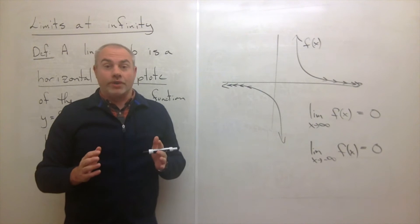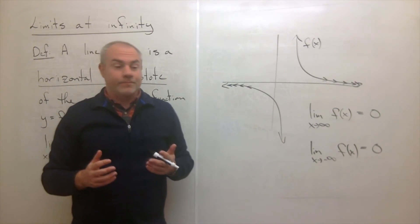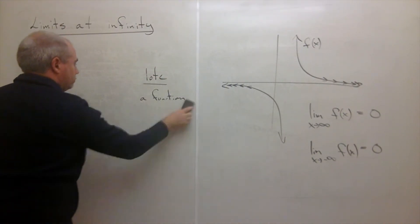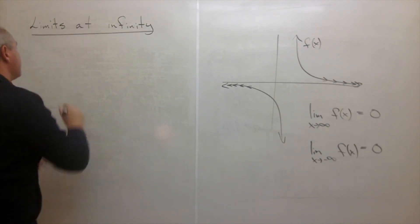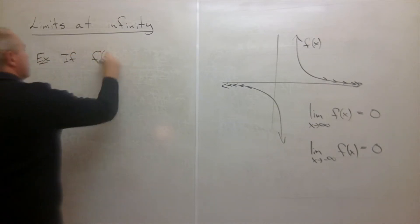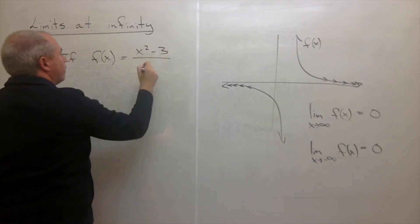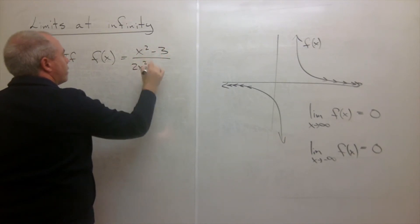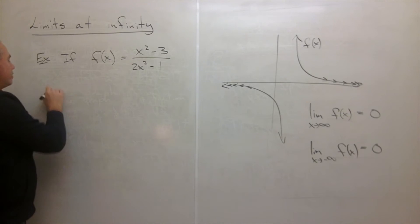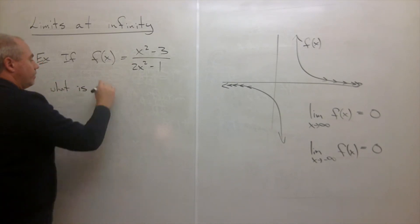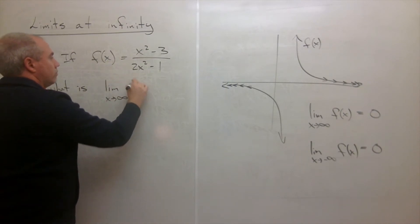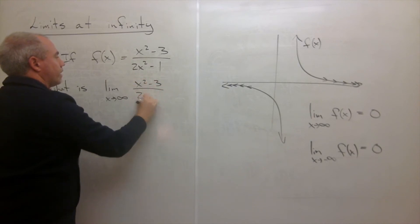Let's try one more real quick just to show you how this works. If f of x is equal to x squared minus three over two x squared minus one, then what is the limit as x goes to infinity of x squared minus three over two x squared minus one?